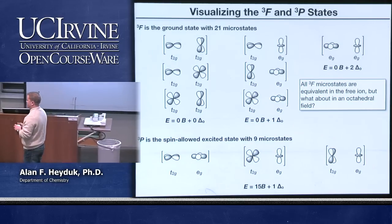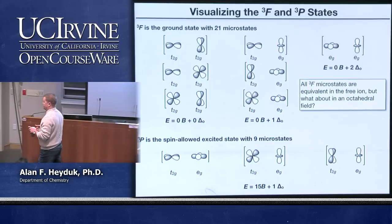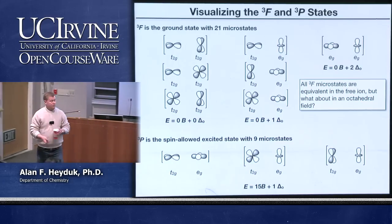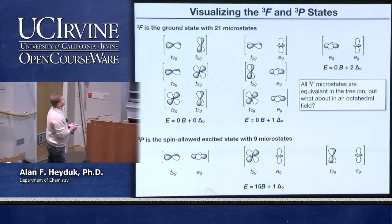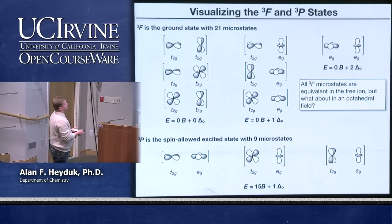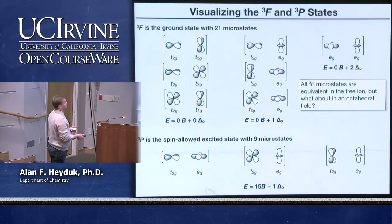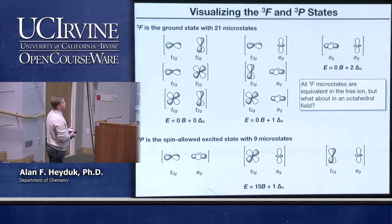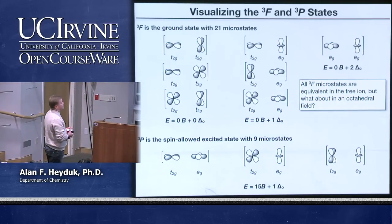Three orbital combinations put those electrons in the same plane. Since electrons have negative charges, putting the two electrons in the same plane of the vanadium ion causes repulsive energy. These three orbital combinations make up the triplet P atomic state, which is higher in energy than the triplet F. That's how we separate the triplet F microstates from the triplet P microstates in the free ion.